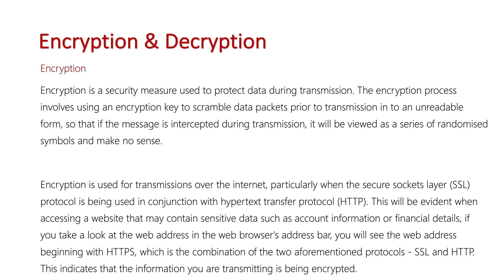Encryption and decryption. Encryption is a security measure used to protect data during transmission. The encryption process involves using an encryption key to scramble data packets prior to transmission into an unreadable form, so that if the message is intercepted during transmission, it will be viewed as a series of randomized symbols and make no sense.